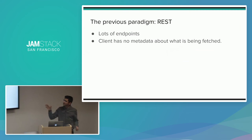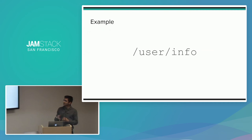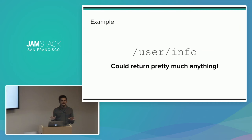Let's talk about the previous paradigm in this area — REST. With REST, you generally have a bunch of different clients and some back-end service architecture. You expose this back-end architecture using lots and lots of endpoints. The client generally has no metadata about what information these endpoints actually represent. For example, if you look at a URL like slash user slash info, a fetch call to this endpoint could return pretty much anything.